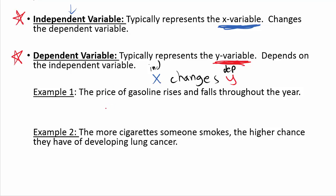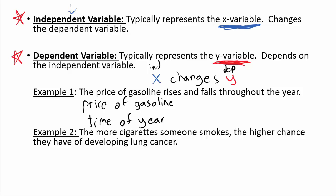Let's look at a quick example. The price of gasoline rises and falls throughout the year — in the summertime gas is more expensive because more people are traveling. To figure out which is the independent and dependent variable, we first identify the two variables. The price of gasoline is one variable, and the time of year — the month, for example — is the other.